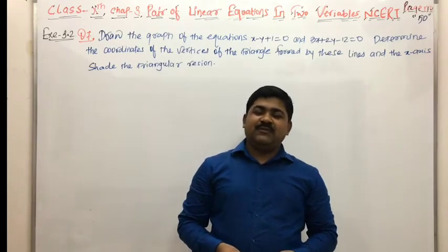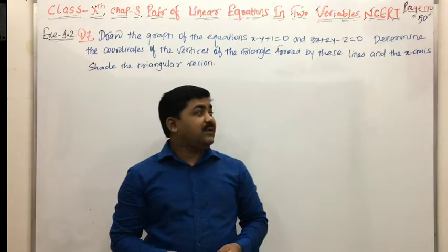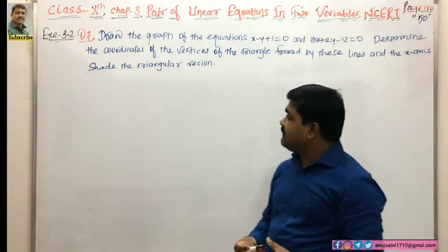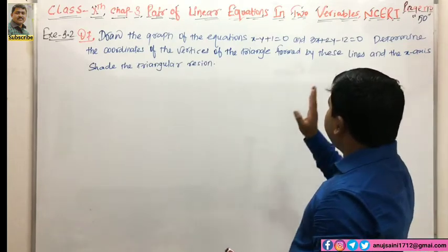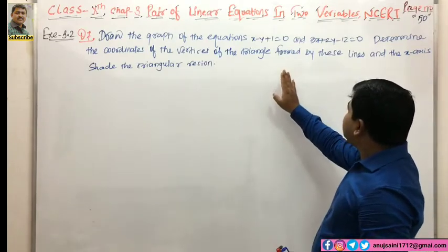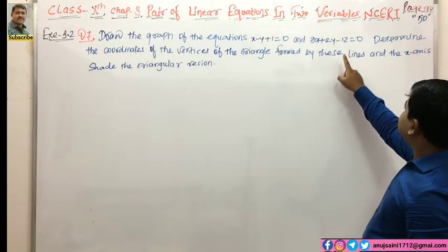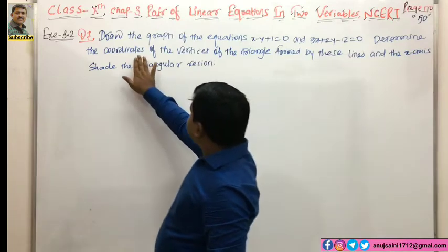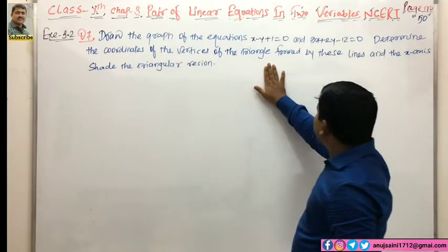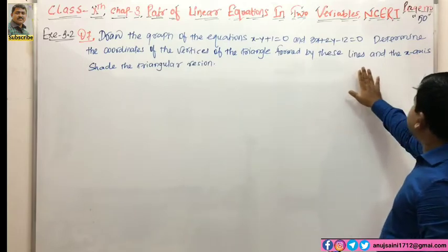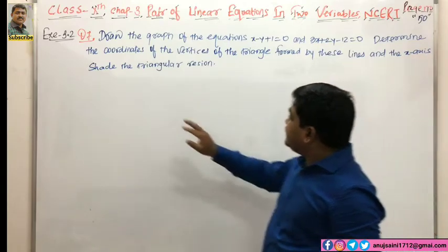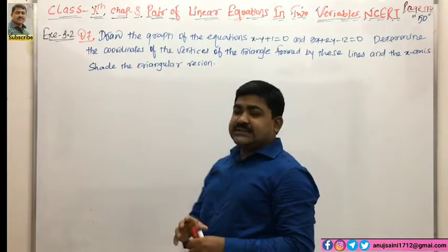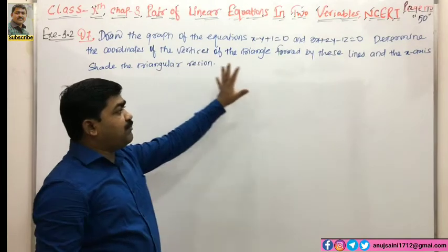Class 10, Chapter 3 - Pair of Linear Equations in Two Variables, NCERT page number 50, Exercise 3.2, Question number 7: Draw the graph of the equations x minus y plus 1 is equal to 0 and 3x plus 2y minus 12 is equal to 0. Determine the coordinates of the vertex of the triangle formed by these lines and the x-axis.